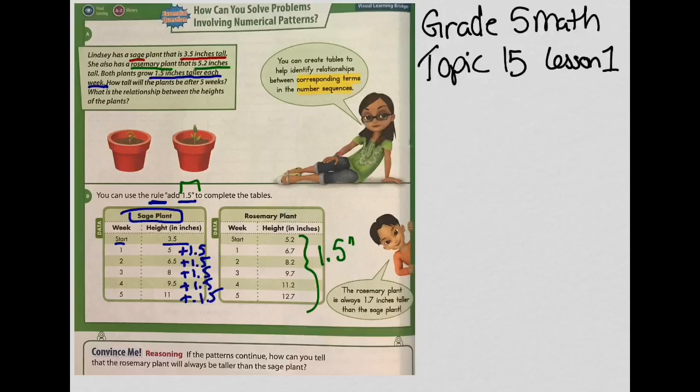When we look at the plants at the end of all this, the rosemary plant is always 1 and 7 tenths inches taller than the sage plant. How did we get that? Let's see if we can find out.